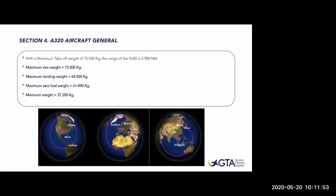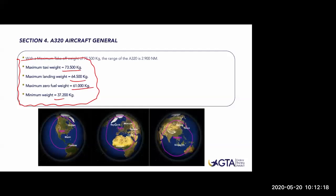In the Airbus manuals or CBT - computer-based training programs - we always have those type of numbers showing the basic weights of the aircraft. Of course you have to pay attention, because the weights depend on the company and operator. Those are the basic ones; those are the limitations. You can find them in the FCOM - flight crew operating manual - in the limitations section. Not all aircraft have the same weights, and not all fleets or companies use the same weights.